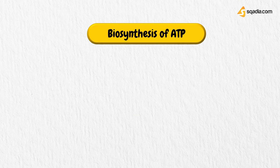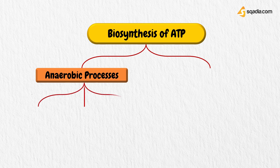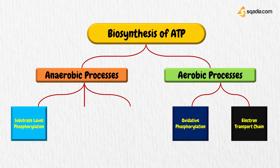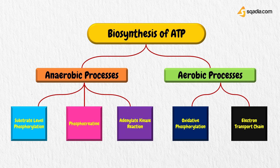ATP can be synthesized by phosphorylation of adenosine diphosphate, ADP, by two types of process. One does not need oxygen and is known as substrate-level phosphorylation. The other requires oxygen and is known as oxidative phosphorylation. Quantitatively, the most efficient method for producing ATP is by aerobic metabolism, by oxidative phosphorylation. However, ATP can also be produced, albeit less efficiently, under anaerobic conditions by substrate-level phosphorylation, from phosphocreatine, and by the adenylate kinase reaction. Although less efficient, the ability to produce ATP without oxygen can be of life-saving importance.